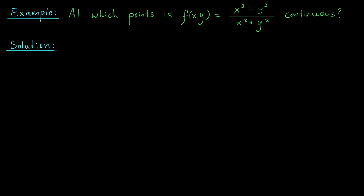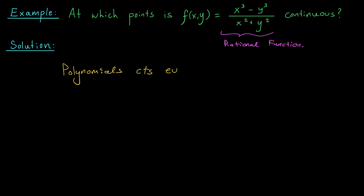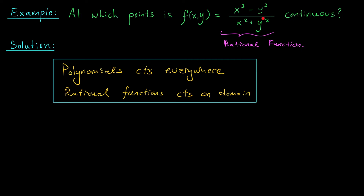Here's a typical problem you'll see when it comes to continuity. I give you a multivariable function, like f(x, y) equals x cubed minus y cubed divided by x squared plus y squared, and I ask: where is this function continuous? Notice that in this case, we have a rational function — it's a quotient of two polynomials involving x's and y's. From Calc 1, you probably learned that polynomials are always continuous, and rational functions are continuous on their domain. The same is true here. Fact: polynomials are continuous everywhere, and rational functions are continuous on their domain. So for this function, it's going to be continuous in most places — f(x, y) is continuous, except perhaps at (0, 0), because in that case we would be dividing by 0. Is it continuous at (0, 0)?